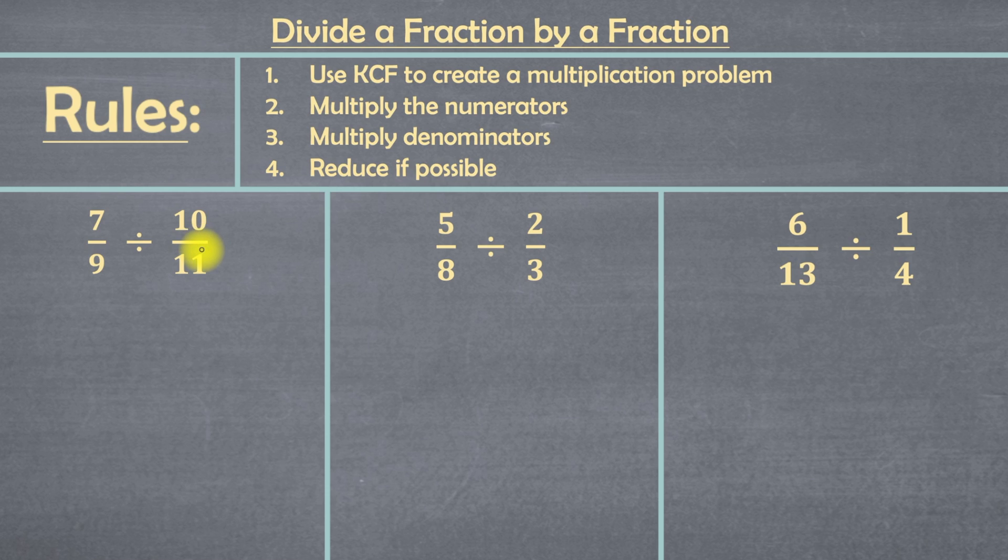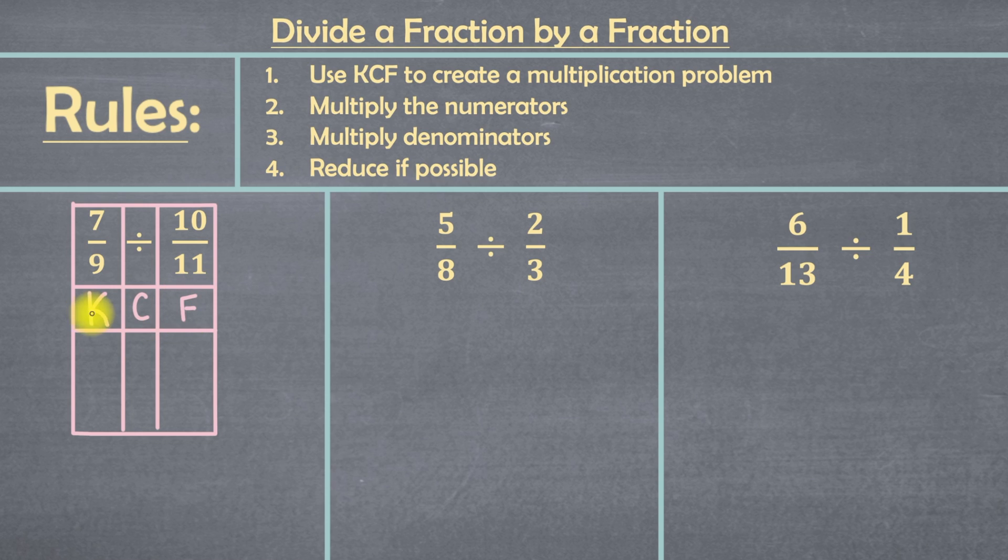So let's set up a KCF table. So the first column in the KCF table is for keep. So we're going to keep this first fraction 7 over 9 exactly the way it is. The C stands for change. And what we're changing is division into multiplication. So let's write that here. Next, the F stands for flip. So the top is going to become the bottom and the bottom is going to become the top. So instead of 10 over 11, we're going to flip this and it's going to become 11 over 10.